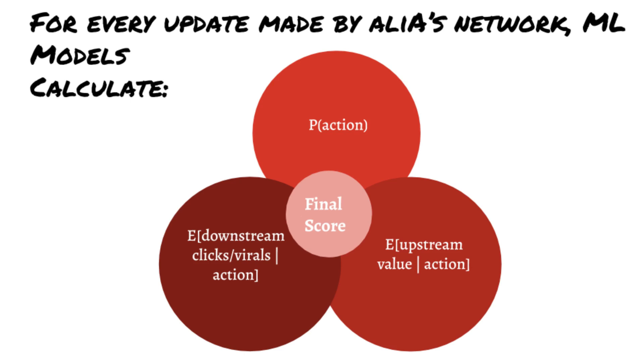It calculates the expected upstream value to Ranbir if Alia takes this action. The outputs of each of these models are then synthesized into one score using a weighted linear combination. Finally, this score is used to point-wise rank all of Alia's connections' updates and therefore show the posts to Alia.